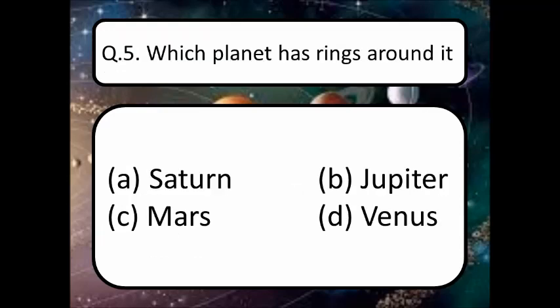Which planet has rings around it? Read out the options: option A — Saturn, option B — Jupiter, option C — Mars, option D — Venus. Think about the correct answer. You can write your answer in the comment box. The correct answer is option A: Saturn. Saturn has rings around it.